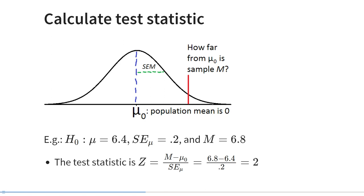The standard error tells us how far away the observed sample mean is from the hypothesized population mean. If it's very far away, the tail probability for such a value would be very small. For example, if our null hypothesis is that the mean equals 6.4, the standard error of the mean is 0.2, and our observed sample statistic is 6.8, the test statistic for a z-test would be (6.8 minus 6.4) divided by 0.2 — that difference is 0.4 divided by 0.2 — so the test statistic is 2.